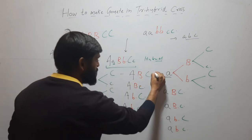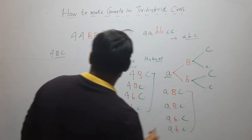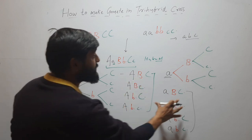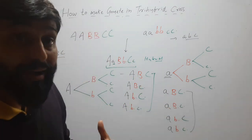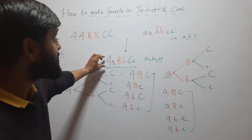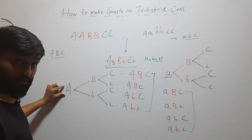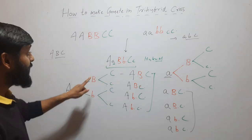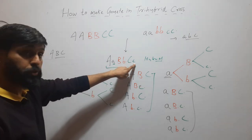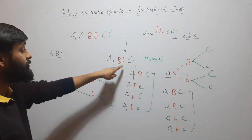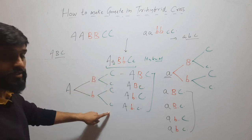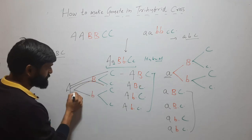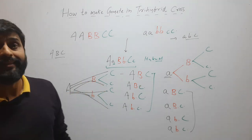So here I will get eight gametes in total — four from capital A and four from small a. These are all the gamete types from this genotype. I will draw branches from A, drag lines for capital B and small b, and each of those will make gametes with capital C and small c. These lines represent my gametes.